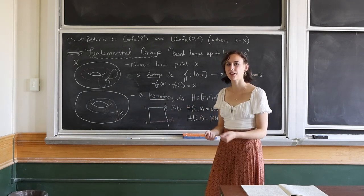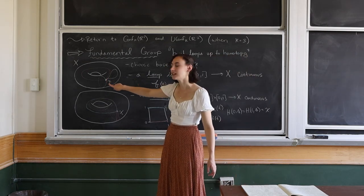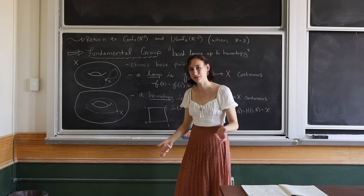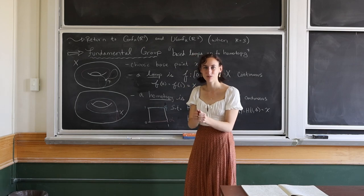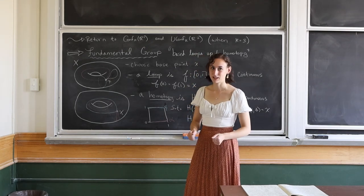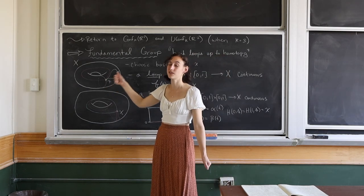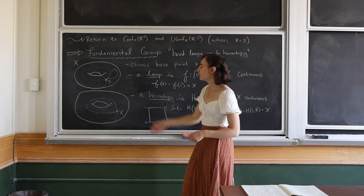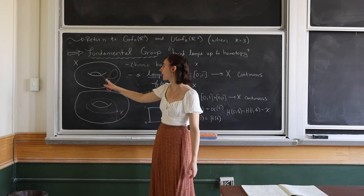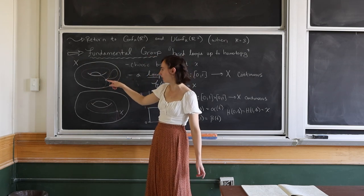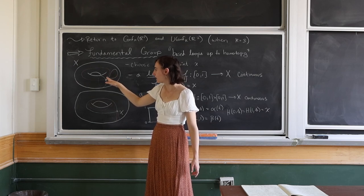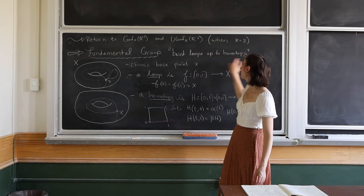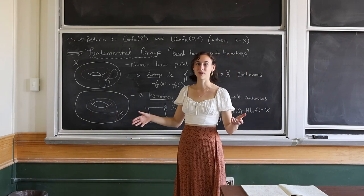You consider two loops the same if they're homotopic. If I have a loop that leaves x and comes back, and then do another loop that leaves x and comes back, doing both together gives a loop that starts and finishes at x — that's the group operation. The identity is given by staying still at x, and if I combine that with any loop I get the same loop. The inverse is given by going backwards — if I go around the red curve and then backwards around it, I can continuously move the turnaround point all the way around until I contract the loop back to x. So base loops up to homotopy really do form a group — the fundamental group.